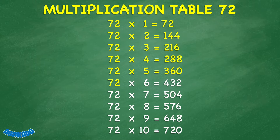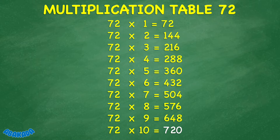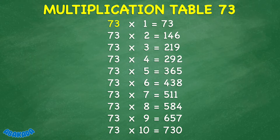72 times 6 equals 432. 72 times 7 equals 504. 72 times 8 equals 576. 72 times 9 equals 648. 72 times 10 equals 720. 73 times 1 equals 73. 73 times 2 equals 146. 73 times 3 equals 219.